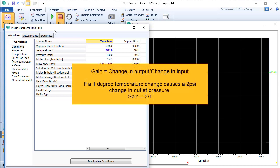If we had a different process and a 1 degree increase in the input caused a 2 psi increase in the outlet pressure, the gain would be 2 over 1, or 2.